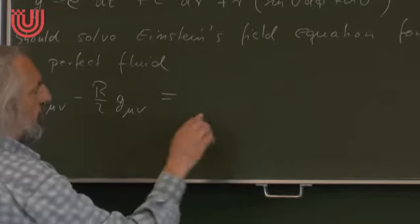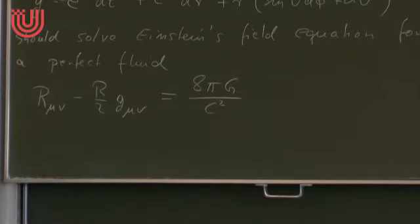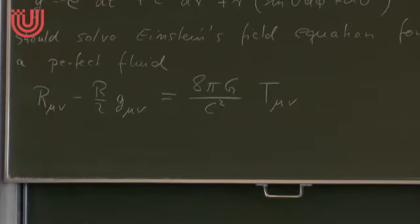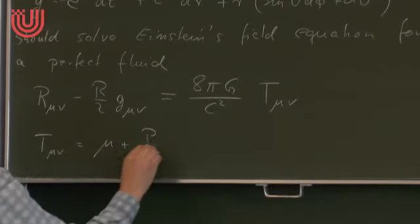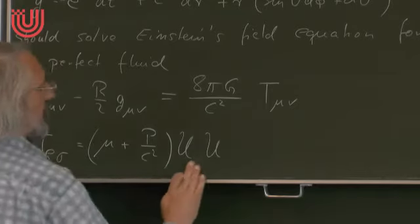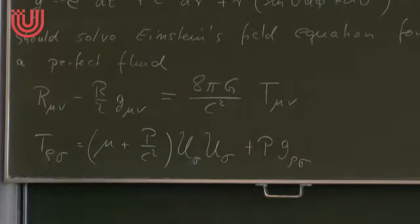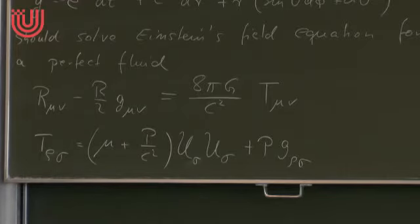For T_μν we specify the form of a perfect fluid: T_μν = (ρ + p/c²) u_μ u_ν + p g_μν. We have done two exercises with this form. You see there are two additional functions — in general they are functions on the spacetime: ρ (the mass density), the pressure p, and the four-velocity. We will specify them further.